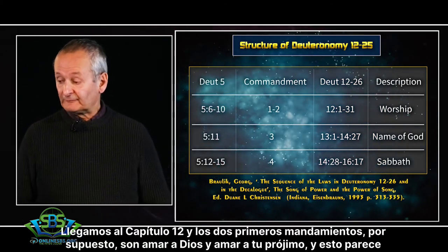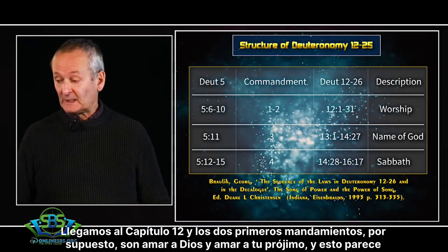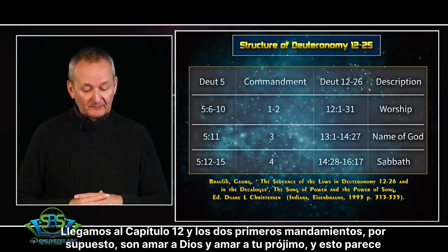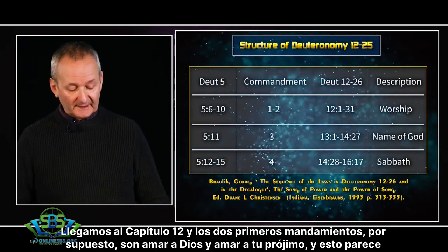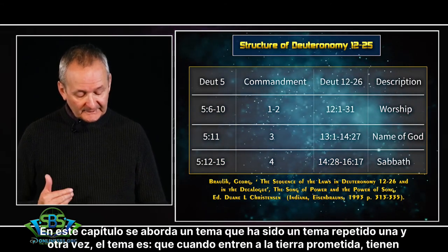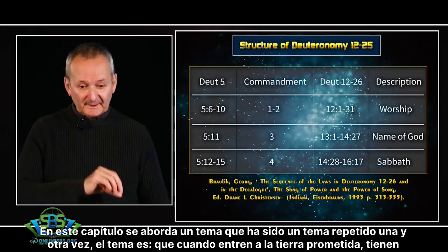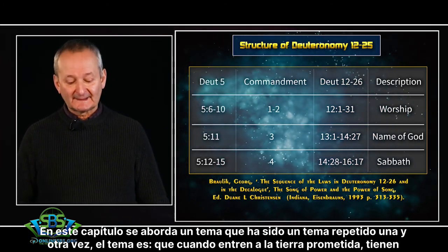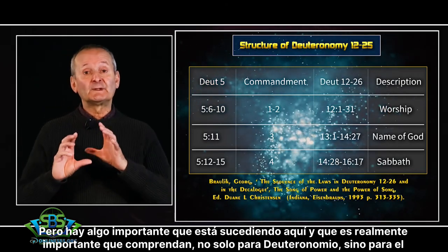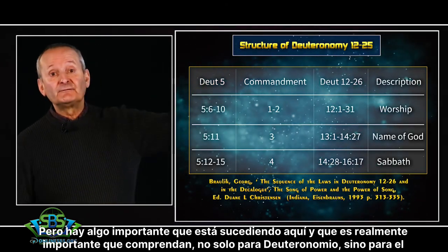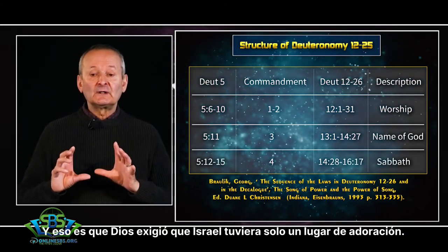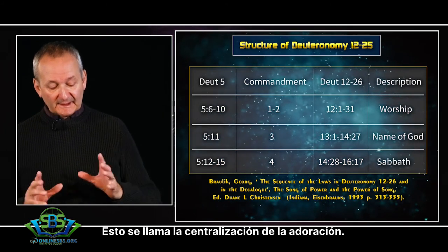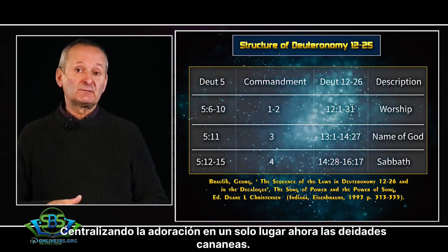We come to chapter 12, and the first two commandments — loving God and loving your neighbour. This seems to be borne out in chapter 12 of Deuteronomy, which is actually a really important chapter. In this chapter, something is repeated over and over again: when they go into the land, they are to demolish every worship place. God required Israel to have only one place of worship. This is known as the centralization of worship — centralizing worship in one place.